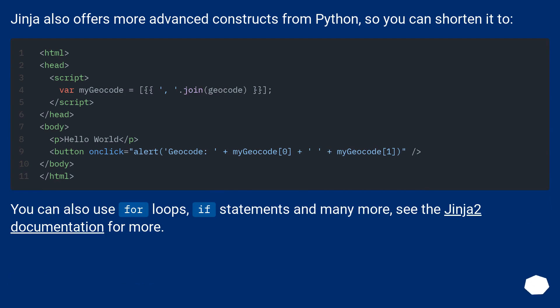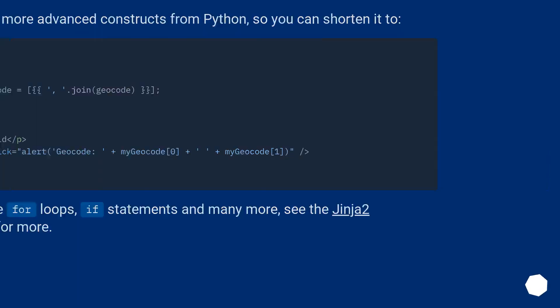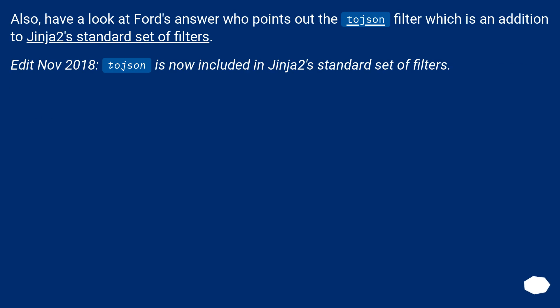Jinja also offers more advanced constructs from Python so you can shorten it. You can also use for loops, if statements, and many more — see the Jinja 2 documentation for more. Also have a look at the answer that points out the tojson filter, which is an addition to the Jinja 2 standard set of filters. Edit November 2018: tojson is now included in Jinja 2's standard set of filters.